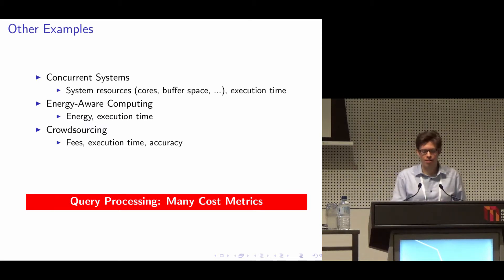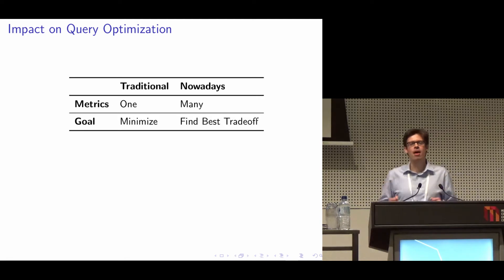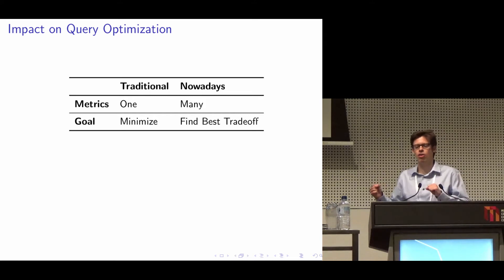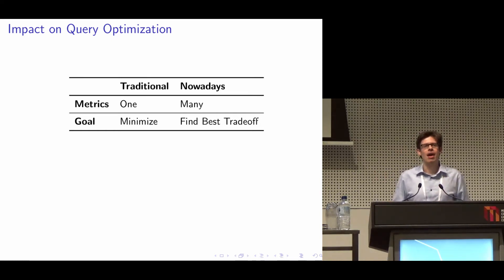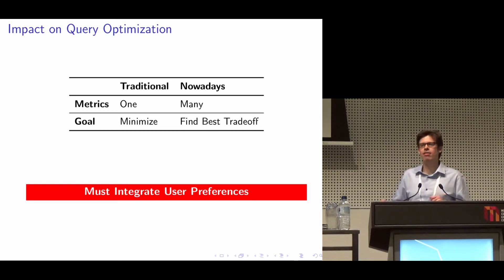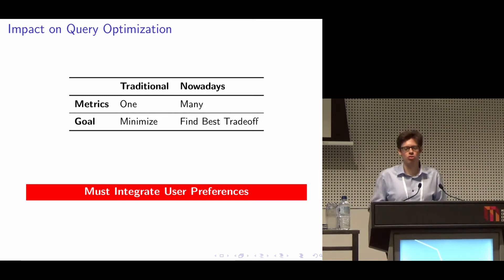This has a fundamental impact on the query optimization problem — the problem of finding the optimal plan for a given query. Because traditionally you had only one cost metric and the goal was to minimize that cost. But nowadays you have many cost metrics that you can trade between. So the goal is rather to find the best trade-off between them, and that means we need to integrate user preferences into the optimization process, because some users might care more about execution time, but others care more about execution cost.